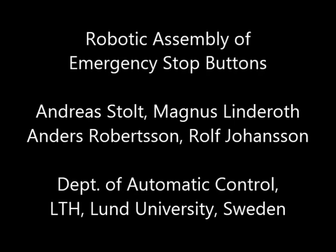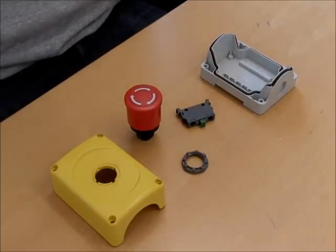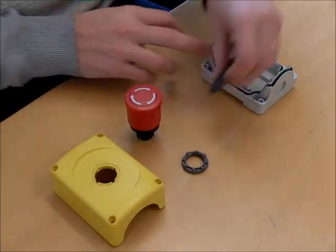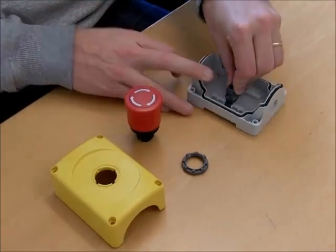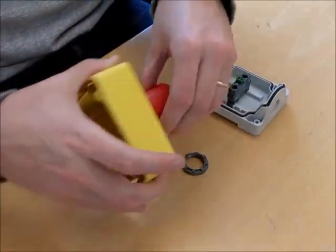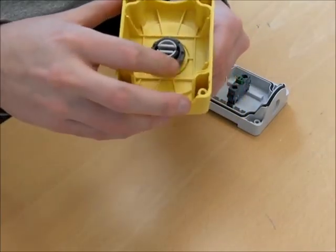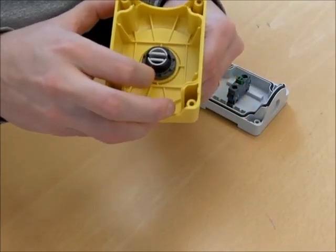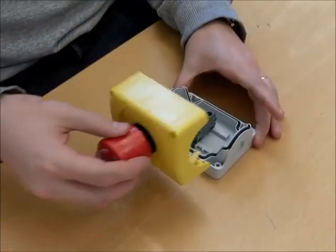This video will present a framework for robotic assembly. The assembly scenario used is this emergency stop button. The switch is snapped into place. The button is inserted into the yellow box and fastened with a nut. Finally the assembly is finished by mating the two remaining parts.